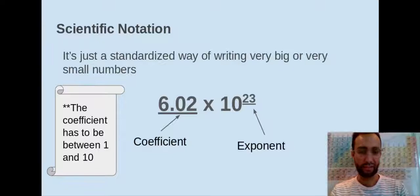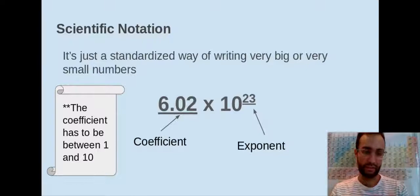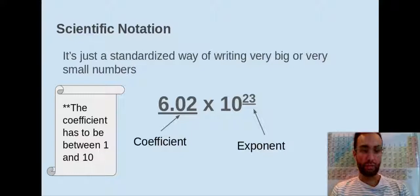Notice here I underlined the 6.02. That particular part of our scientific notation format is considered the coefficient. And then the 23 is raised — it's an exponent. Those are the two main components of writing a number in scientific notation aside from the times 10 part. Notice our number here is between 1 and 10, so all numbers in scientific notation are going to be between 1 and 10 — really only one number to the left of the decimal point.